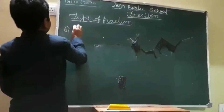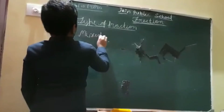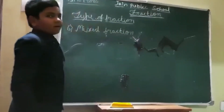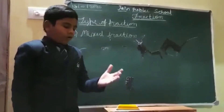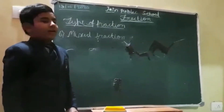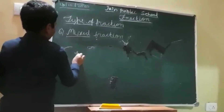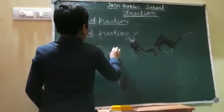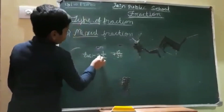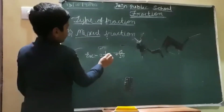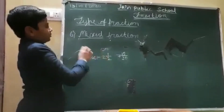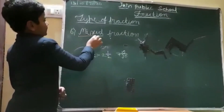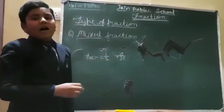Sixth one is mixed fraction. A fraction which consists of a proper fraction and a whole number is called a mixed fraction. For example, 2 whole 1 by 2, or 7 whole 15 by 30. Here, 2 is the whole number and 1 by 2 is the proper fraction, so it is called a mixed fraction.